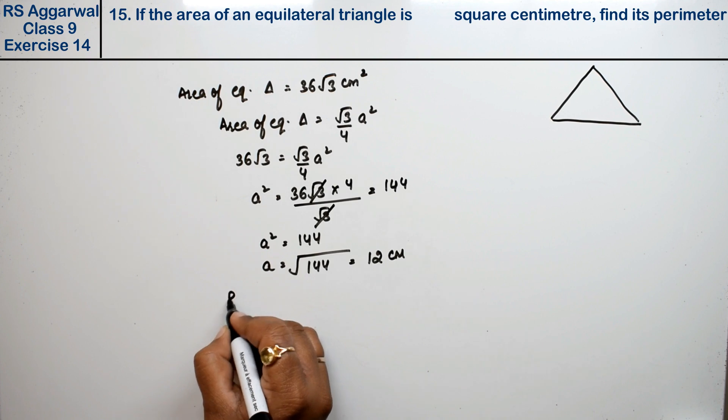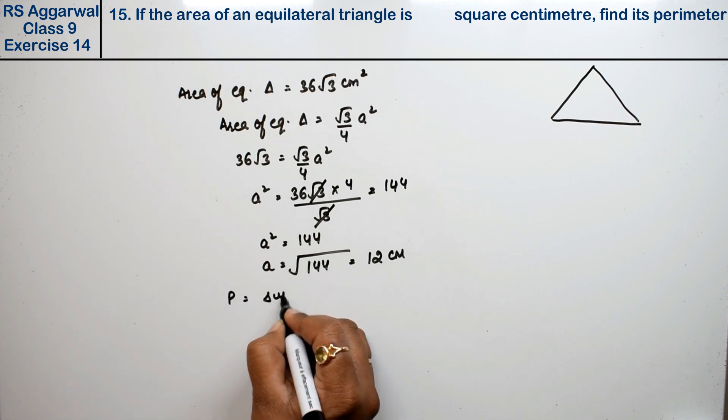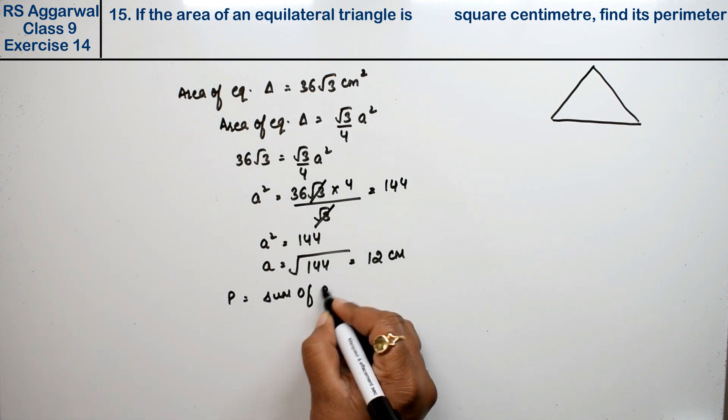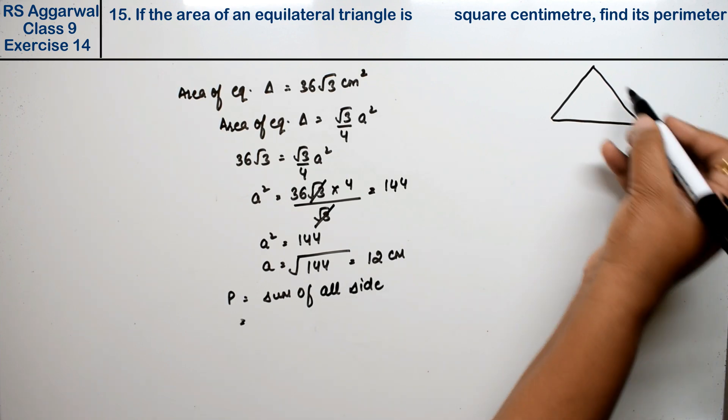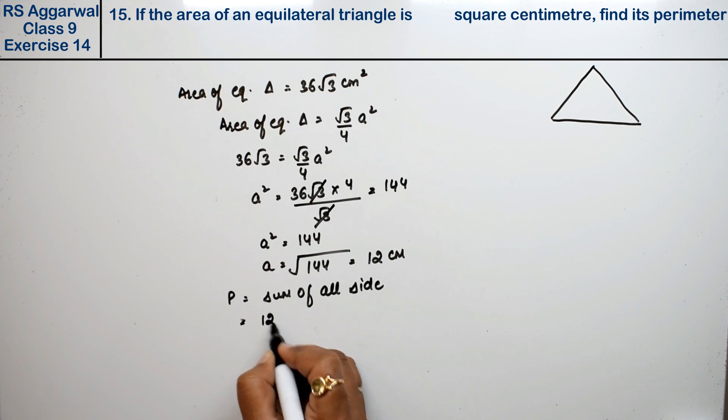Now we have perimeter. We know that sum of all sides is called perimeter. So if we have 3 sides, we will add 3 times: 12 plus 12 plus 12.